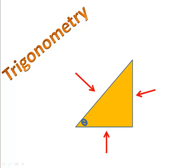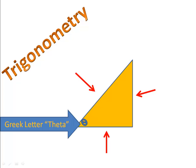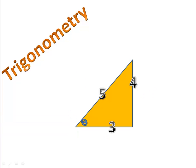By the way, you see that symbol down there in the angle? That's the Greek letter theta. Theta is simply what we use to denote an angle in trigonometry. So we have these triangles, and we have an angle, and we have all these sides — so what on earth is going on here?